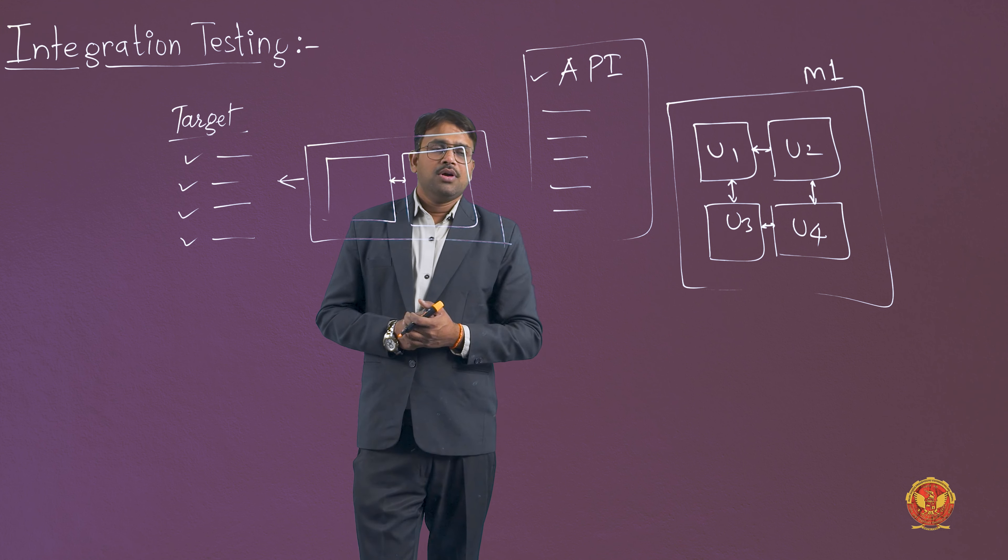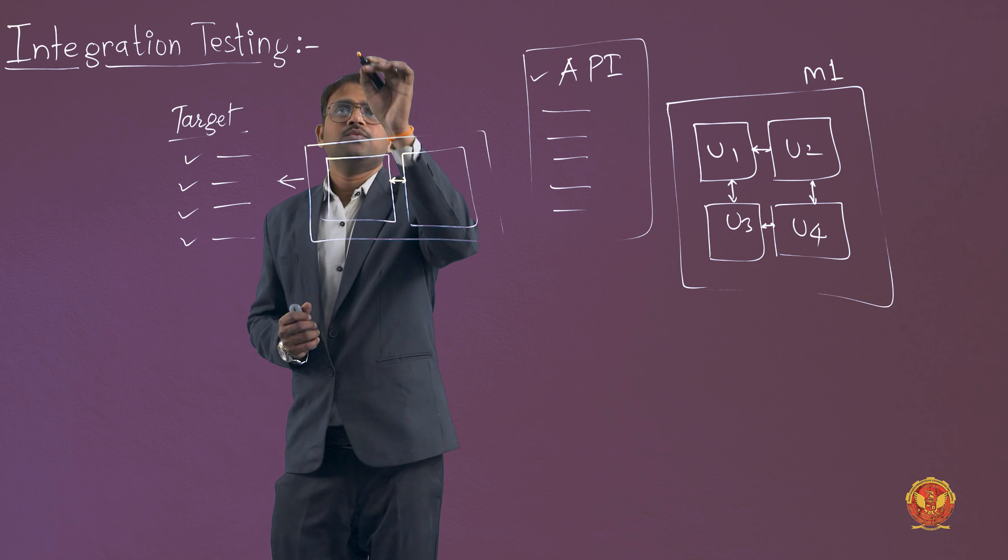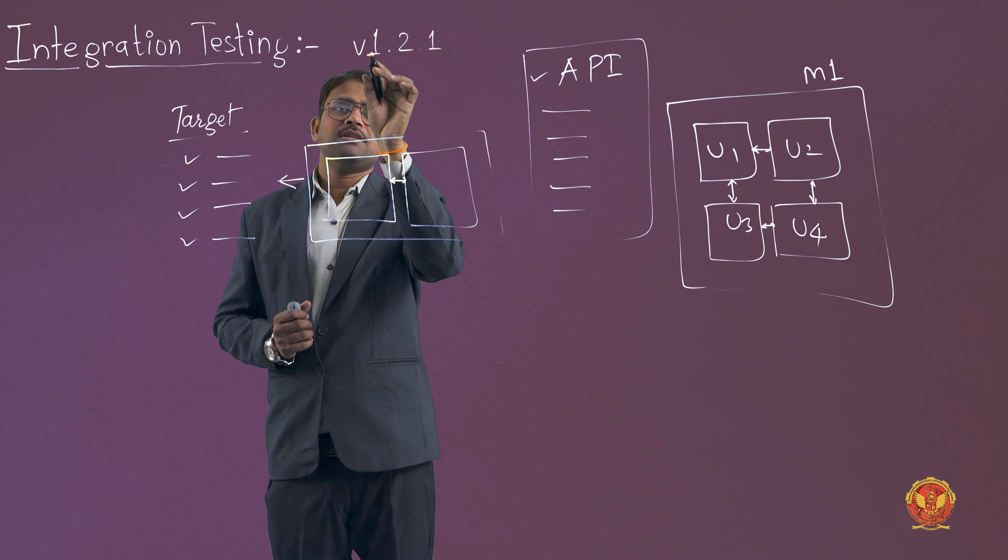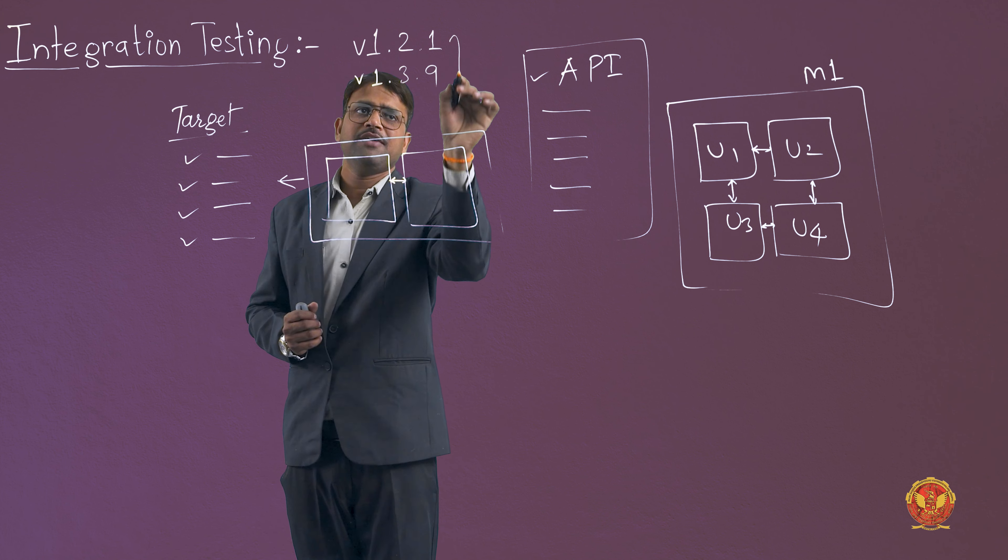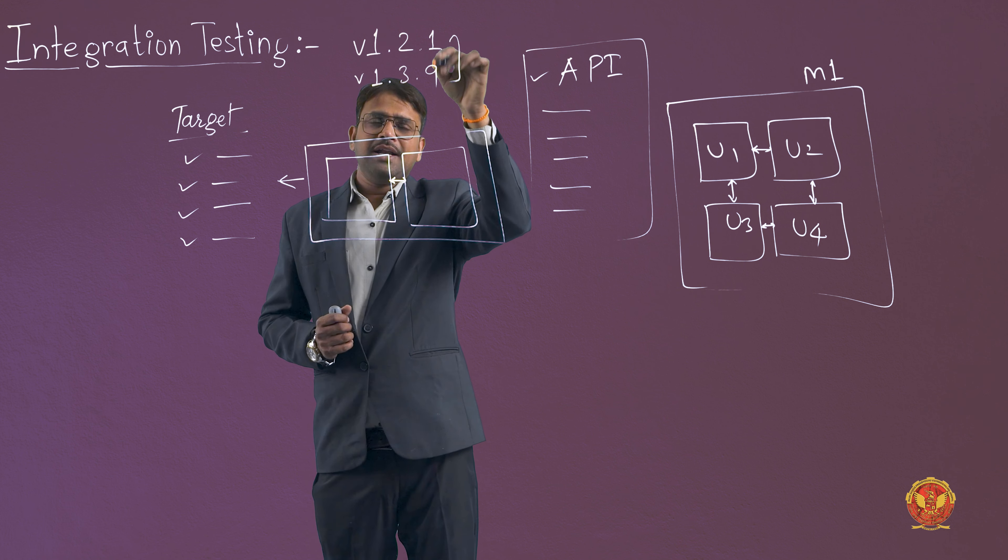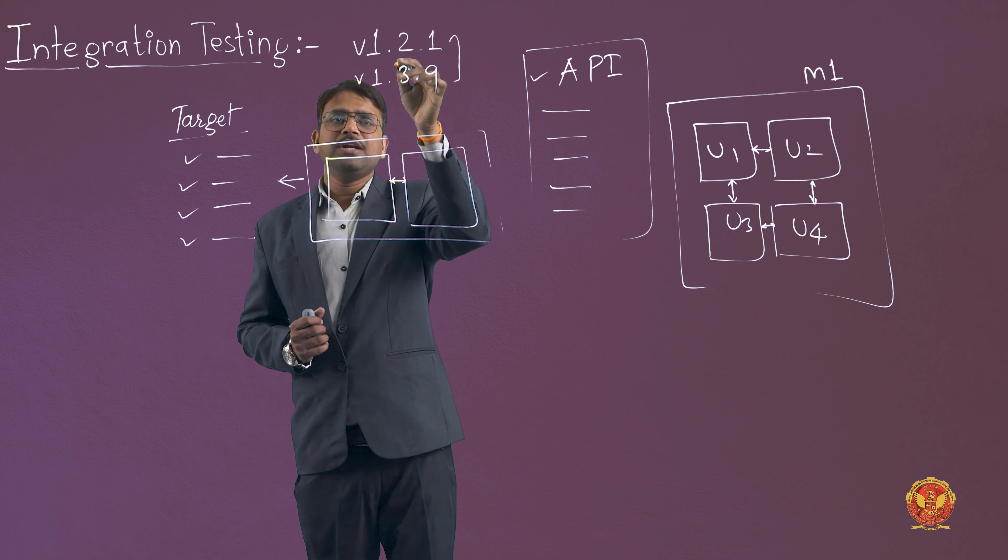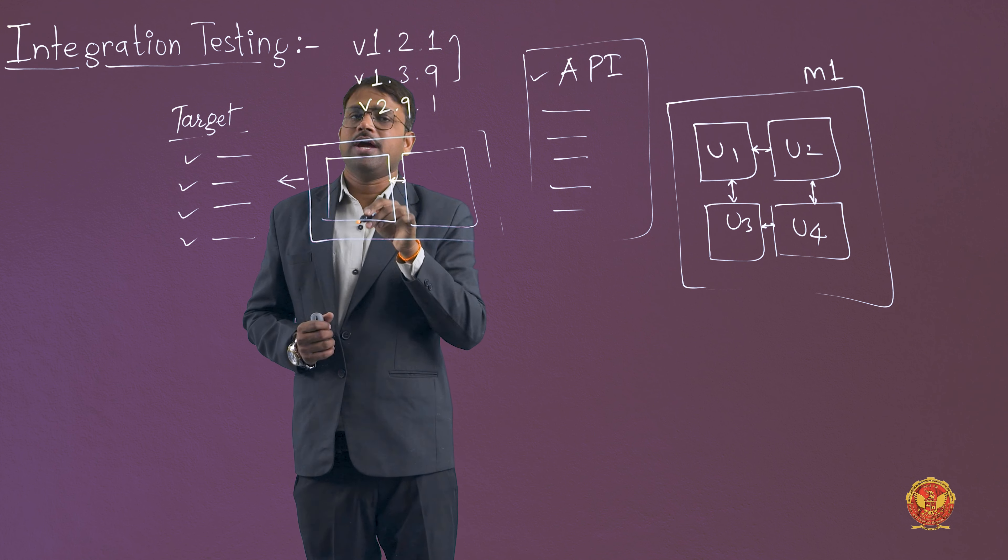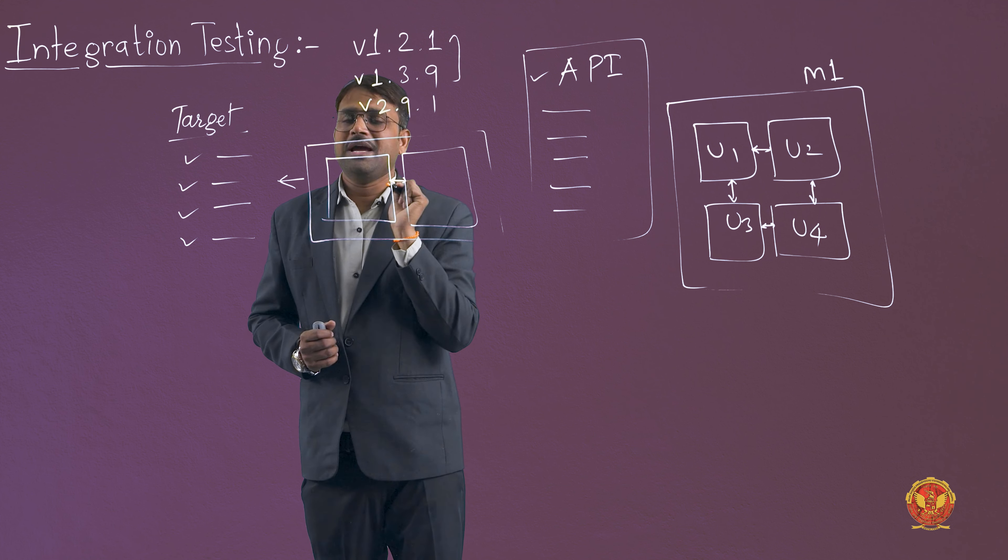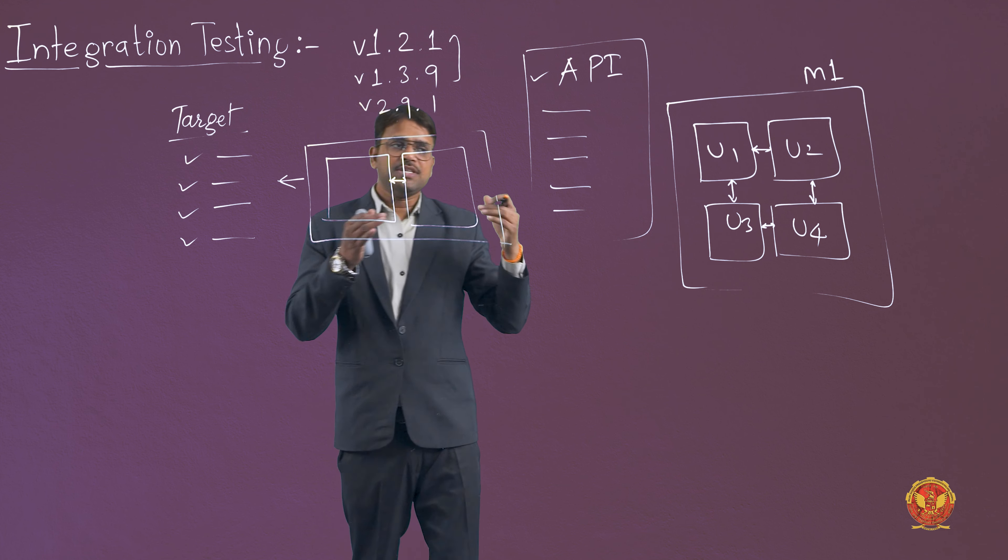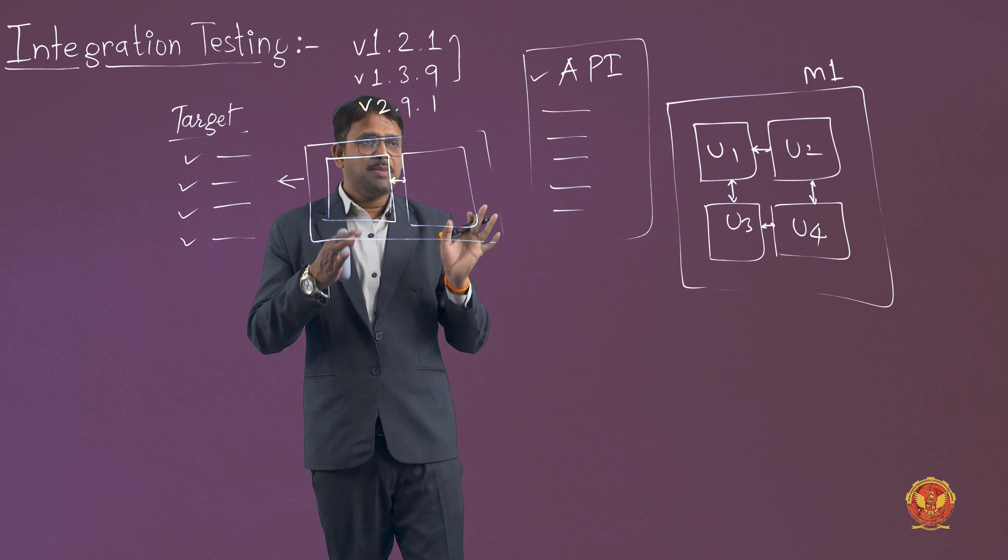Theek hai iska ek chhota sa example ho lete hain. Version hum padh chuke hain maine aapko shuruvaati classes mein bataya tha. Agar version 1.2.1 ki baat kar rahe hain aur version 1.3.9 ki baat kar rahe hain in dono mein kya bataate hain. Aur yeh sabse pehli digit agar change hoge, maanlo yeh version 2.9.1 ho gaya to iska matlab hai major changes hua hai. One se two ho gaya yeh pehli digit. Theek hai so major, intermediate and minor changes.